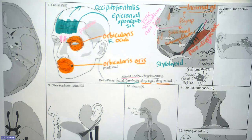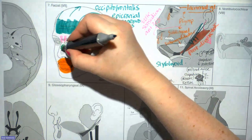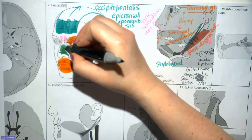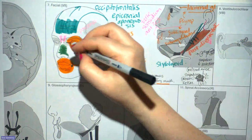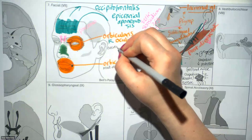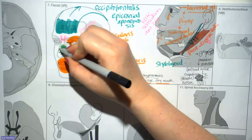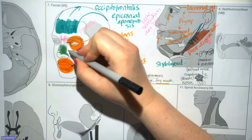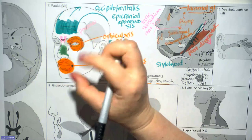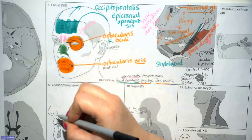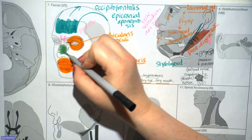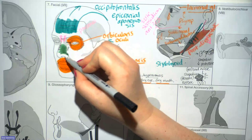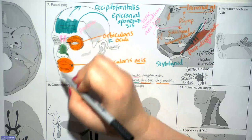There is also a muscle associated with the nose called nasalis. Nasalis has two parts: the transverse part compresses the nasal opening and connects to the nasalis on the other side via a little nasal aponeurosis, attaching to the maxilla. The lower alar part attaches to the alar cartilage and pulls it out, helping to open or flare the nostril — important for conveying anger and during heavy exercise when the nose might otherwise close.